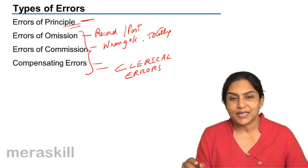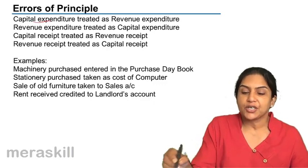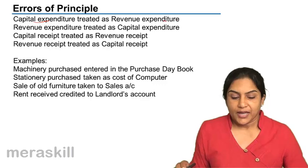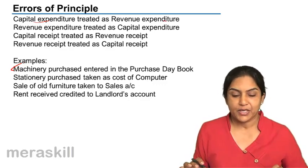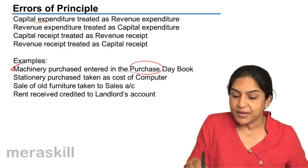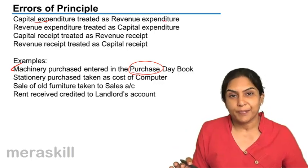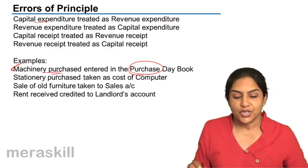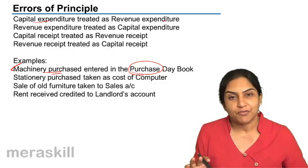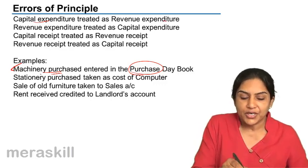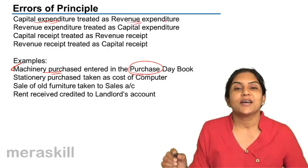Let us look at each of these types of errors in a little more detail. Errors of principle: capital expenditure may be treated as revenue expenditure. Take an example — machinery purchased. If machinery is purchased, it is a capital expenditure. If this has been entered in the purchase day book, the effect is that purchases account is debited and the creditor is credited. But assuming it is purchased on credit, it should ideally have gone to the journal proper, where we would say machinery account debit to creditor for machinery. So instead of debiting machinery account, we have wrongly debited purchases account, treating this capital expenditure as revenue expenditure.